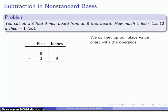So we'll go ahead and set up our place value chart with our operands. So I have 8 feet, that's my original board length, and I want to subtract from that a board of 3 feet 9 inches.